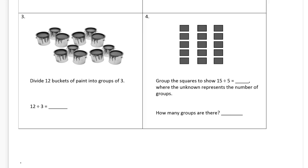There's three and four. Now we're counting buckets. Divide 12 buckets of paint into groups of three. So there's going to be three, three, three, three. Twelve buckets of paint divided by three in each group is four groups.